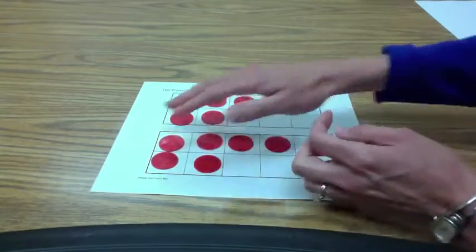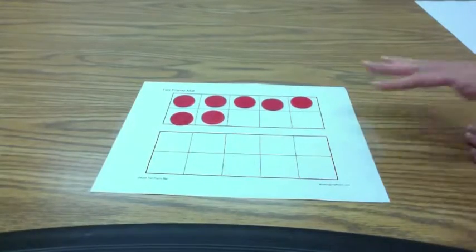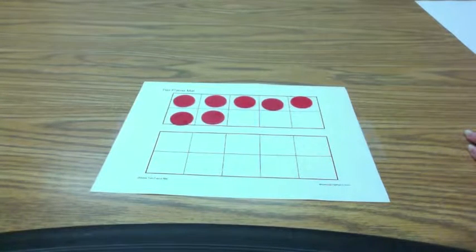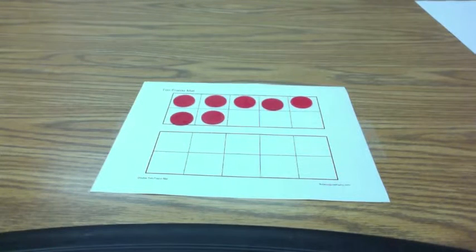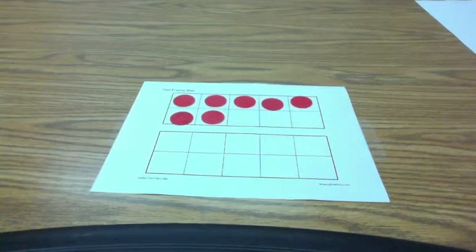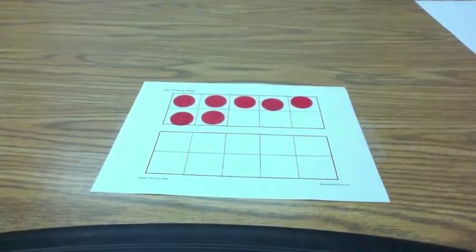The third thing that kids are going to need to know is that if they see something like 7, they know how many more it is to make 10. So knowing those 10 facts. Once they have those skills in place, we will be able to use this double 10 frame to support them in learning how to add and subtract without counting.